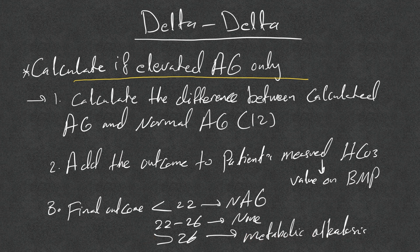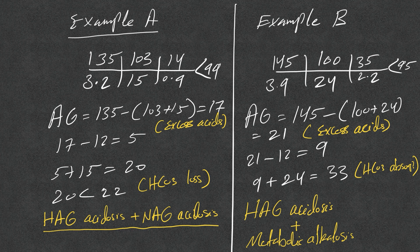Example A: anion gap = 17 — high, so there is excess acid. 17 minus 12 = 5; 5 plus bicarb of 15 = 20. Since 20 is less than 22, there is an element of bicarb loss. The patient has both high anion gap acidosis and normal anion gap acidosis.